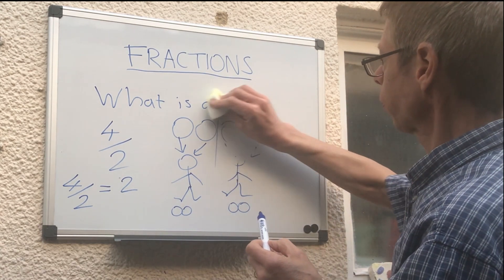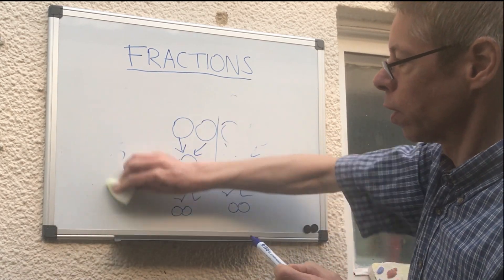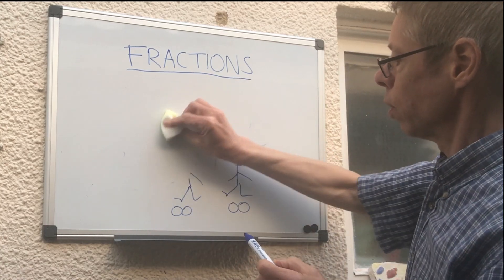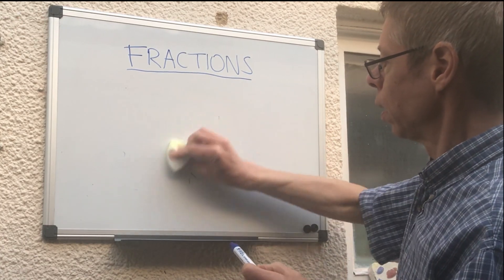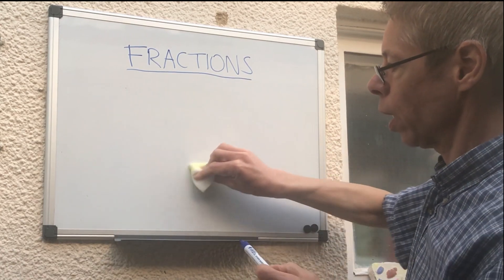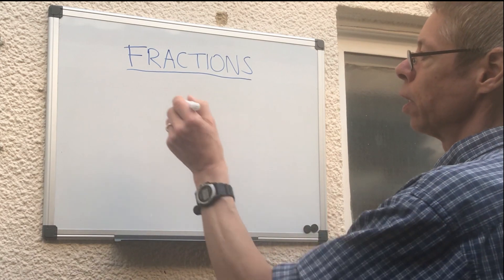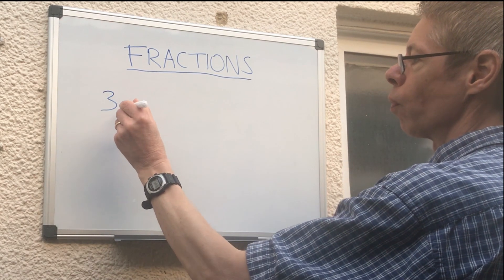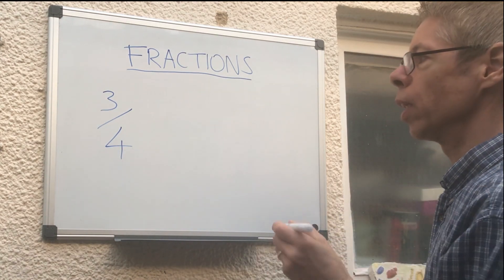Okay, so another way of looking at fractions. A fraction is always a division sum, which is great, but there's another little trick to it. Say you've got 3 quarters. We're going to come into some technical words now.